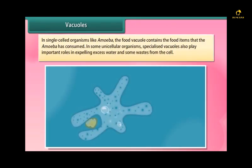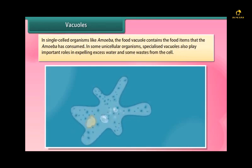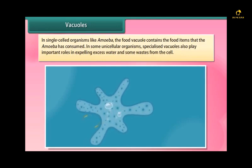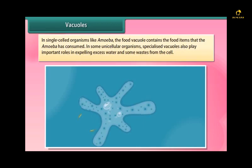In single celled organisms like amoeba, the food vacuole contains the food items that the amoeba has consumed. In some unicellular organisms, specialized vacuoles also play important roles in expelling excess water and some wastes from the cell.